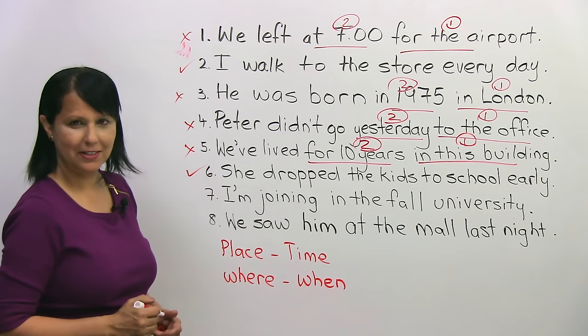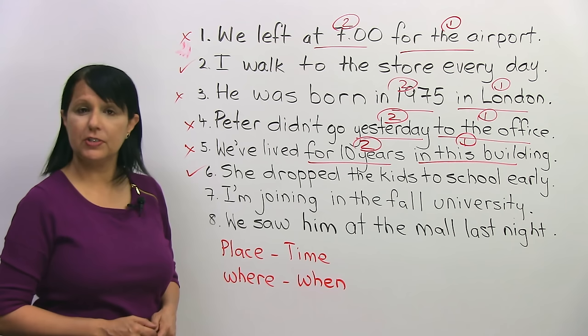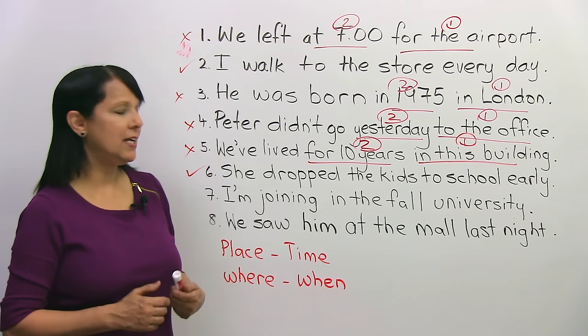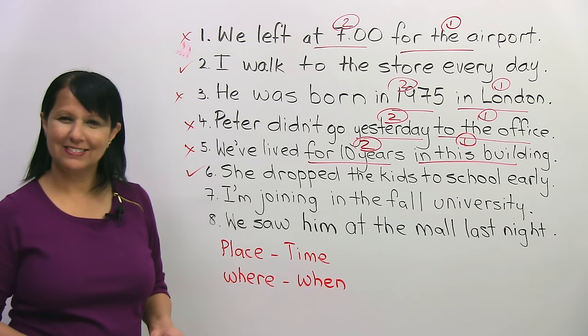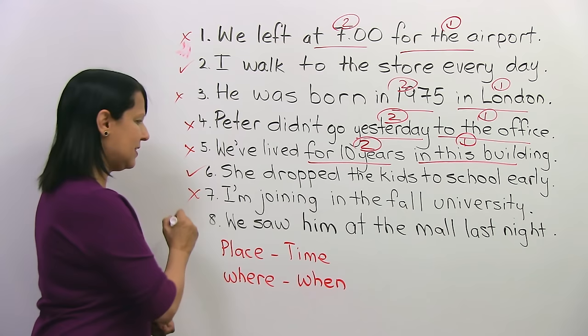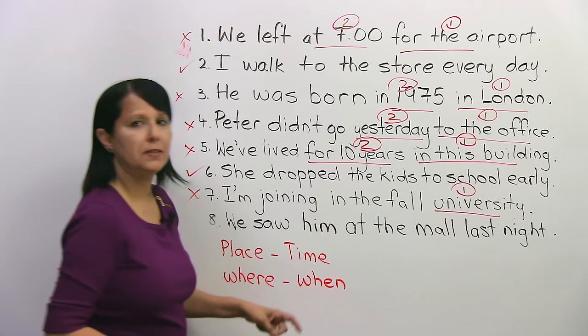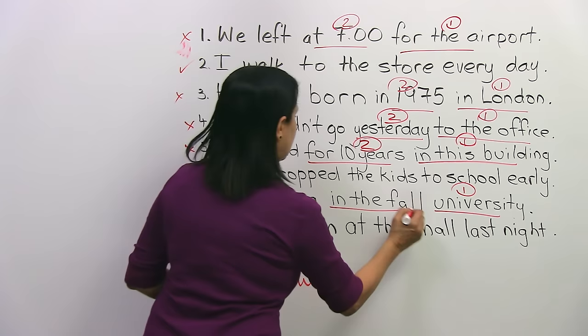Number seven: 'I'm joining in the fall university.' Is it right or wrong? It's wrong. I'm joining where? University. When? In the fall. So it should be: 'I'm joining university in the fall.'